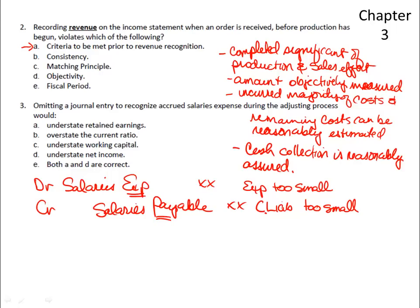It violates A — the criteria that must be met prior to revenue recognition. To quickly review those four criteria: one, you have to have completed a significant portion of the production and sales effort. If you're recording revenue on the income statement when the order is received but before you started production, you have not completed the significant portion of production and sales effort.